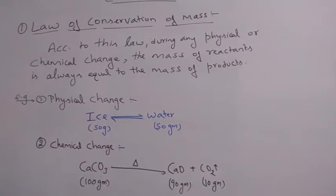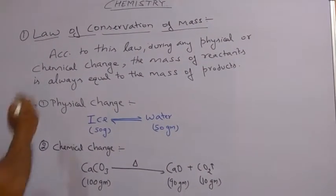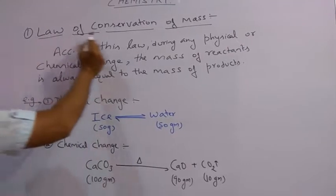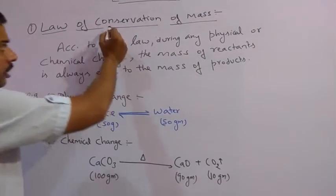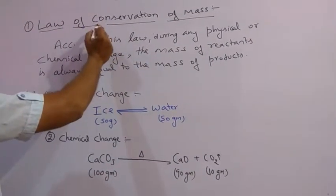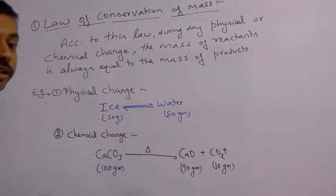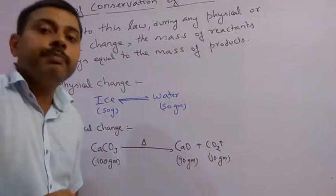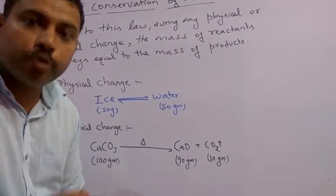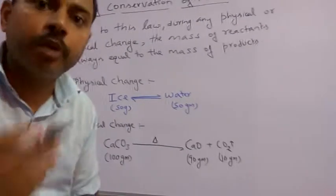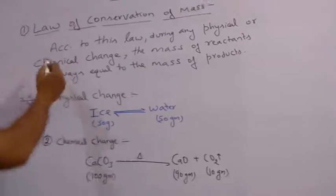This is the first law of chemical combination. The first law was named as law of conservation of mass. I will first tell the meaning of conservation in Hindi, as the mother tongues are Hindi. Conservation means that it is saved. If there is something that is saved by chemical action, listen to the definitions.